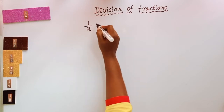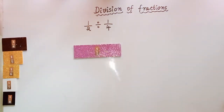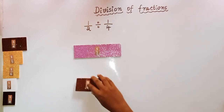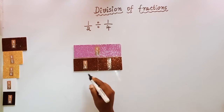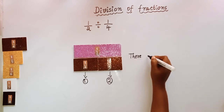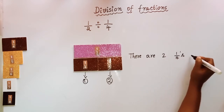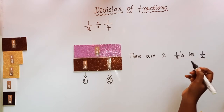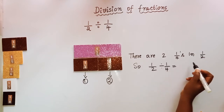Let us see another example: 1/2 divided by 1/4. How do we do this? Take 1/2. How many 1/4s are there in 1/2? How many 1/4s can fill 1/2? See — 1 one-fourth, 2 one-fourths. So there are 2 one-fourths in 1/2. Therefore 1/2 divided by 1/4 is equal to 2.